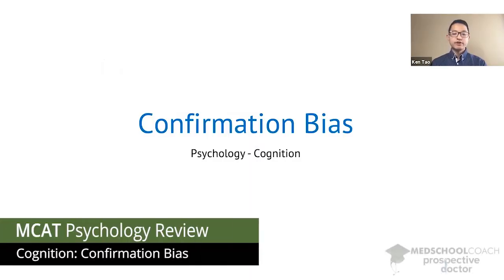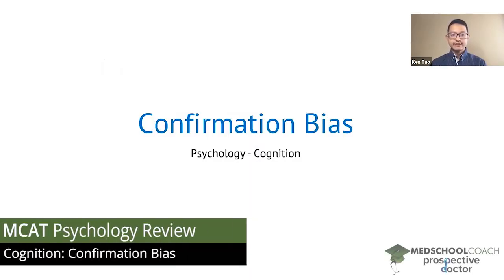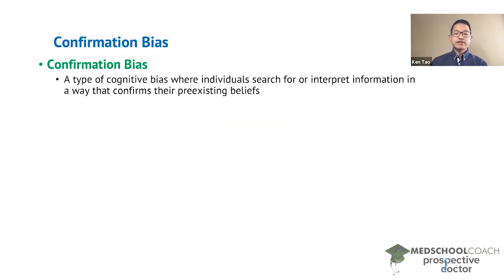In this video we're going to go over confirmation bias. Confirmation bias is a type of cognitive bias where individuals search for or interpret information in a way that confirms their pre-existing beliefs.